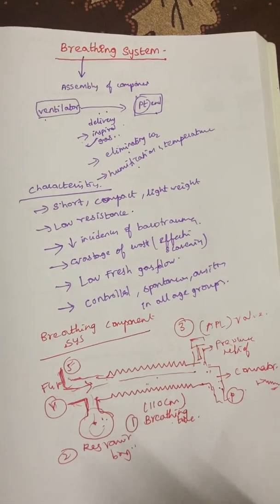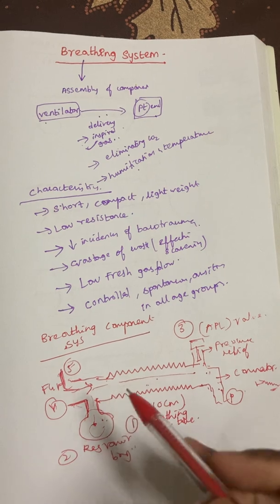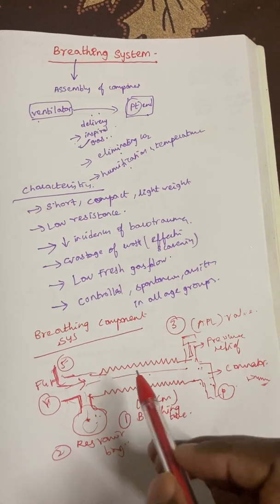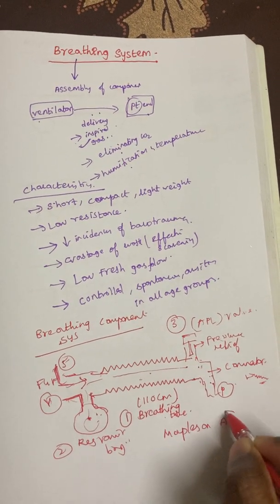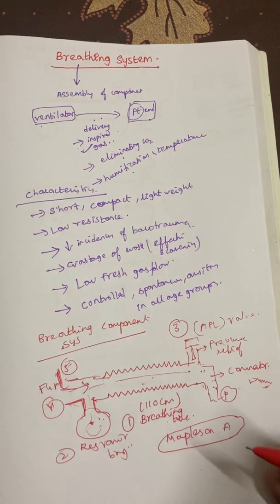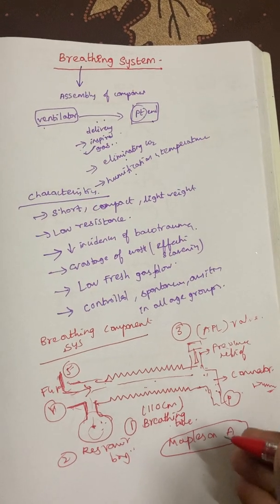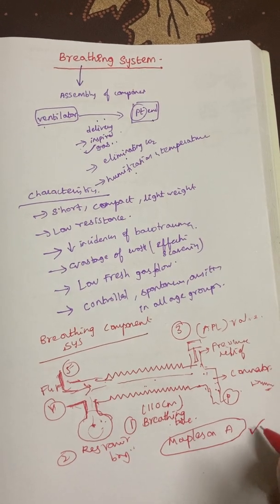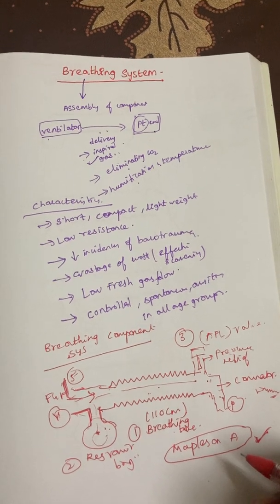These are the 5 components of an ideal breathing circuit. I have drawn mostly the Mapleson A part. The breathing system is classified depending upon usage into open, semi-open, semi-closed, and closed circuit. We are discussing the semi-closed circuit, which is the Mapleson circuit. Today I am discussing Mapleson A specifically.